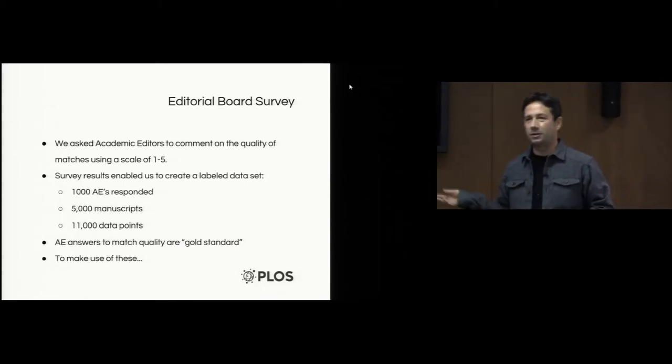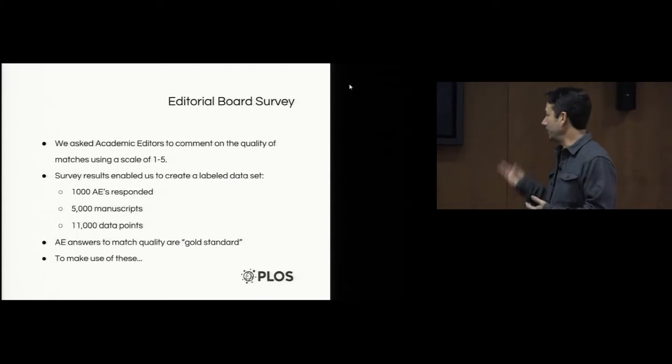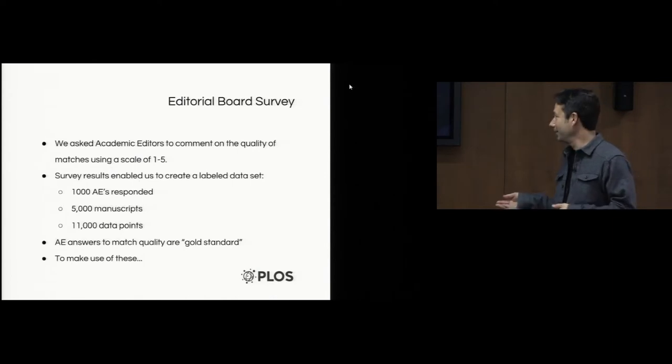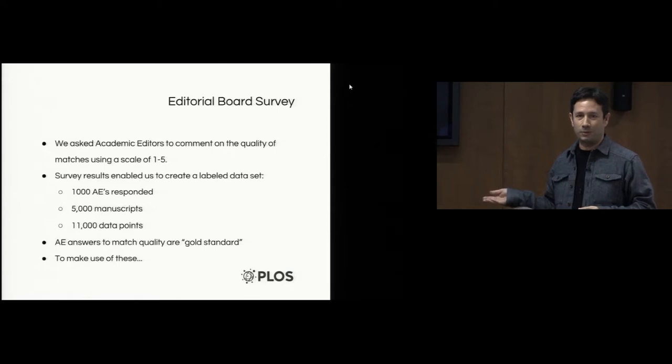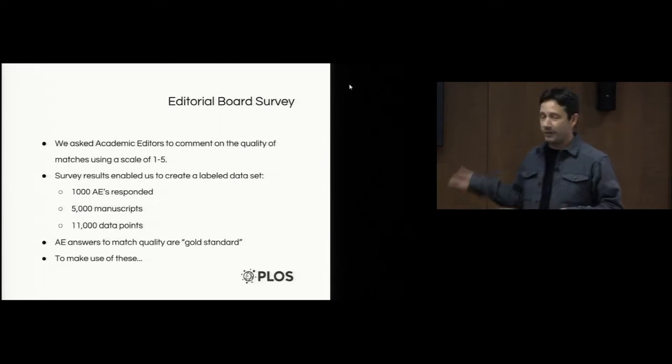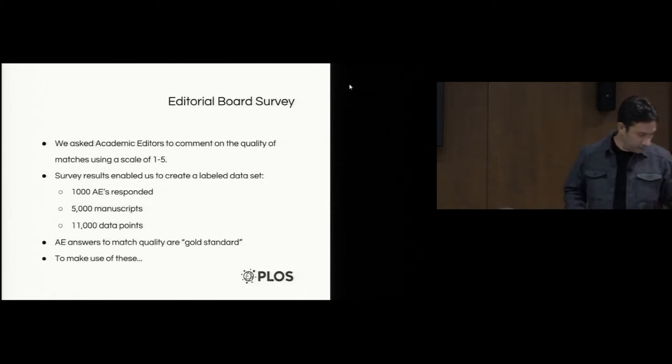A little bit about the editorial board survey. We sent the survey out to the entire ed board. They could tell us on a scale of one to five, was this a good invitation or a bad invitation? Bad was one, five was great. We had about a thousand editors respond to us, which was a really great response. We had about 5,000 manuscripts that they commented on over the course of a few weeks, and we got about 11,000 data points out of that. The answers that they gave us were our gold standard that we worked with.